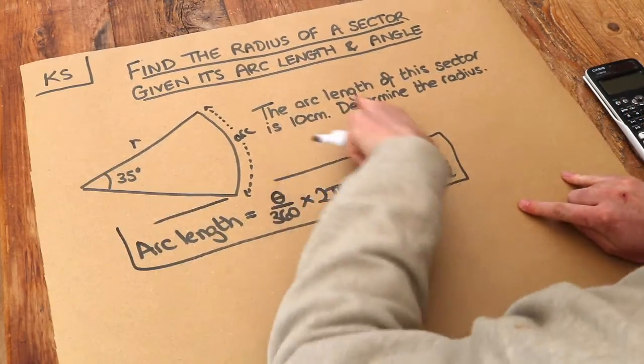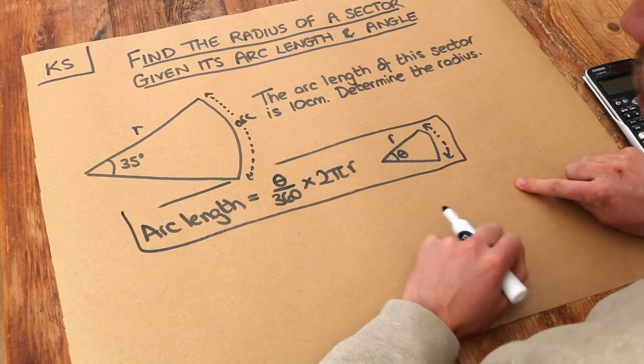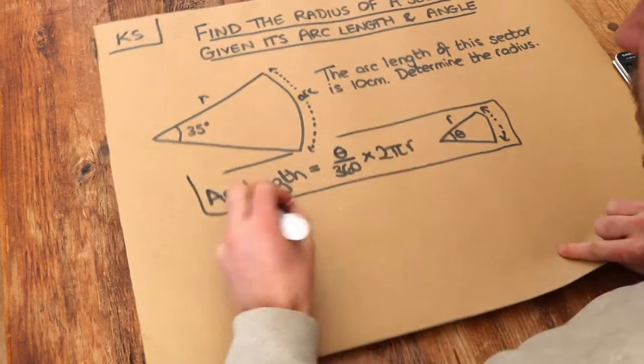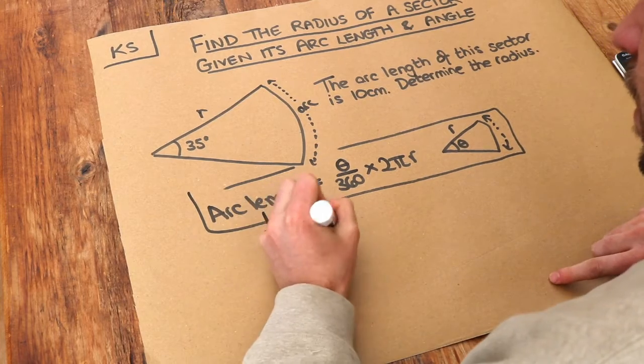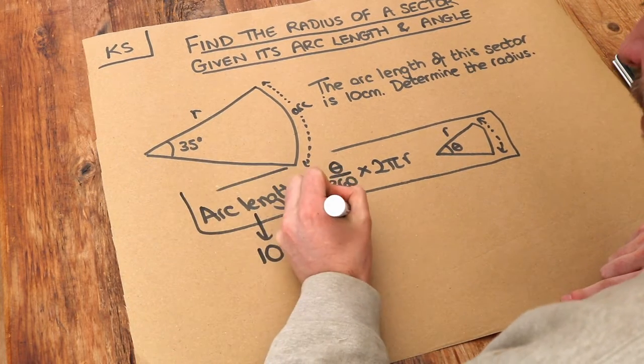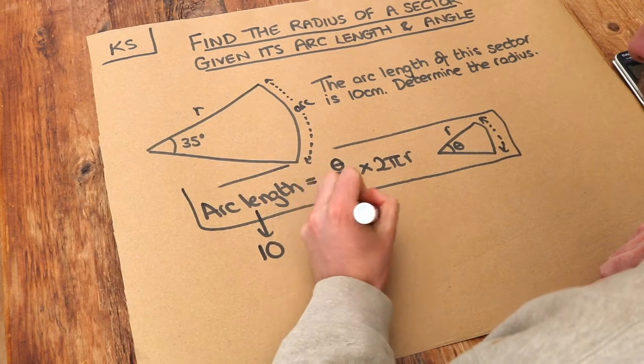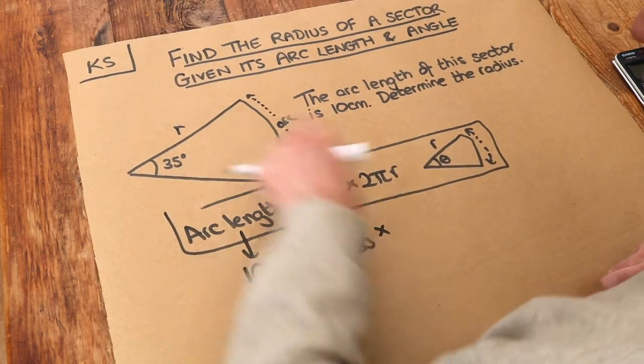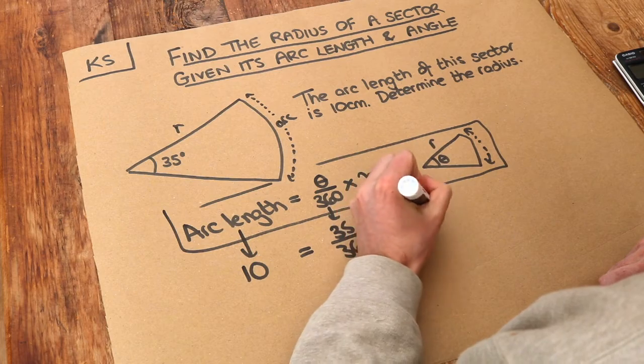Let's fill in all the information we have into this formula. What is the arc length? We're told that equals 10. What is theta? The angle at the center of the circle is 35. So 35/360 × 2πr. We don't know what r is, so we're just going to leave it as r.